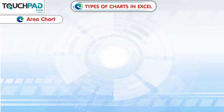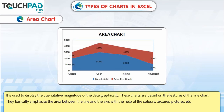Area chart: It is used to display the quantitative magnitude of data graphically. These charts are based on the features of the line chart. They basically emphasize the area between the line and the axis with the help of colors, textures, pictures, etc.